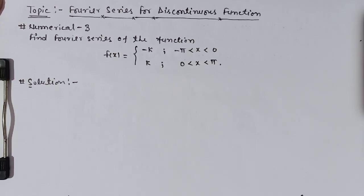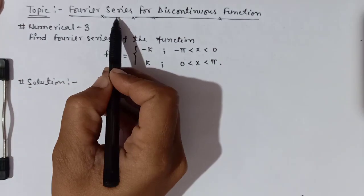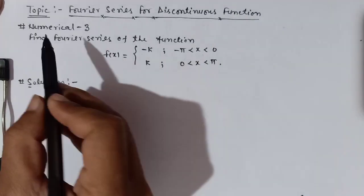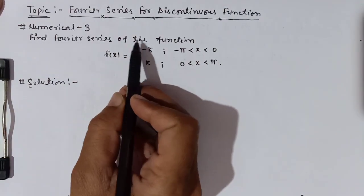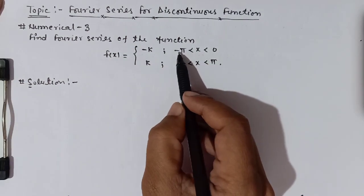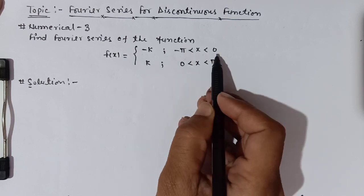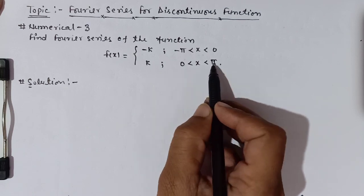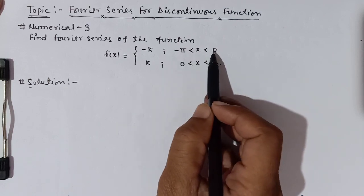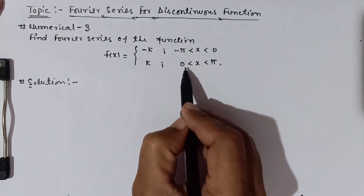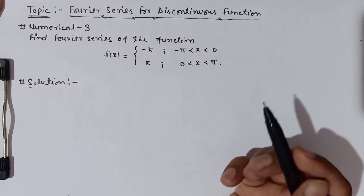Hello students. In this lecture we will discuss Fourier series for a discontinuous function. Find the Fourier series of the function f(x) = -k where the limit goes from -π to 0, and k where the limit goes from 0 to π. This means from -π to 0 the function is continuous, from 0 to π the function is continuous, but at 0 the function is discontinuous.